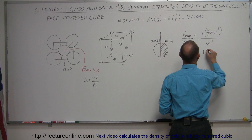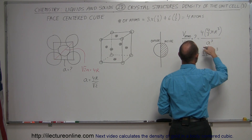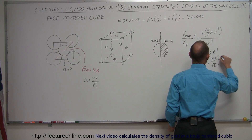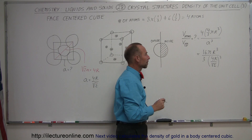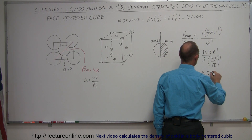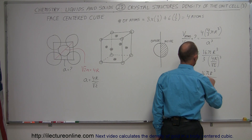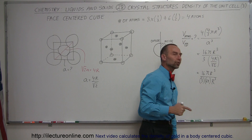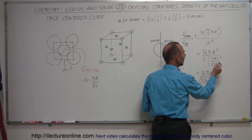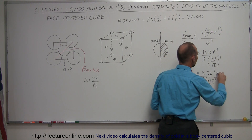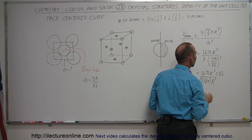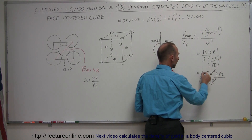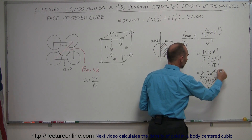This gives us 16πr³ in the numerator. In the denominator we have 3 times (4r / √2)³. Expanding: 4³ = 64, giving 64r³, and (√2)³ = 2√2 — but since it's in the denominator of the denominator, it moves to the numerator as 2√2. The r³ terms cancel, 16/64 simplifies to 1/4, and further cancellation leaves π and √2 in the numerator with 2 and 3 in the denominator.